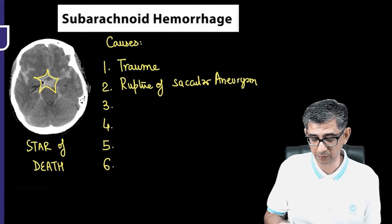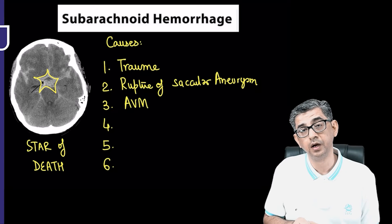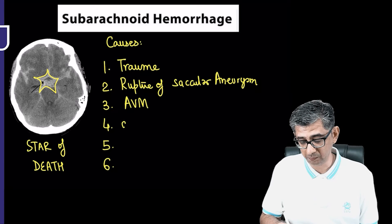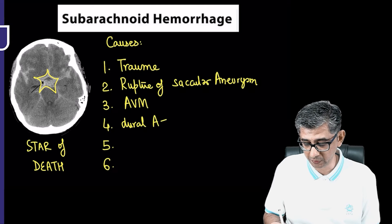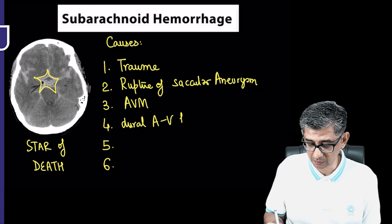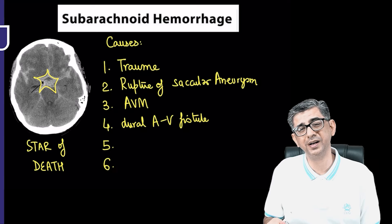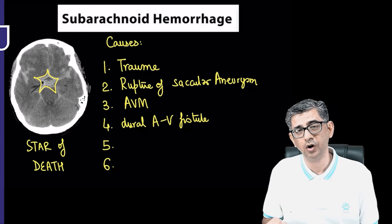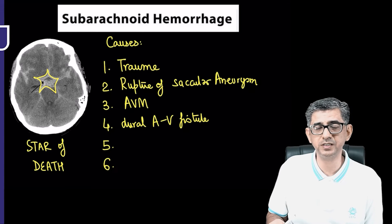The third important cause to remember is arteriovenous malformation (AVM). The fourth cause is dural arteriovenous fistula, and the fifth cause is extension of an intracerebral hemorrhage.